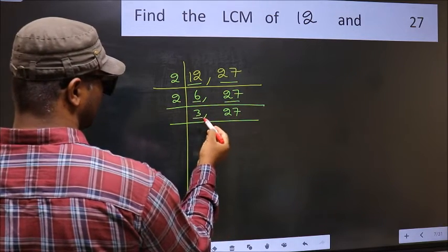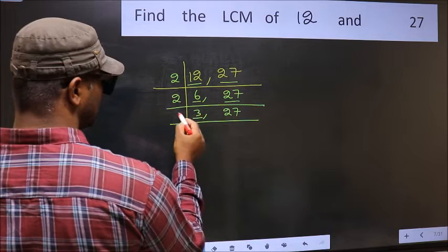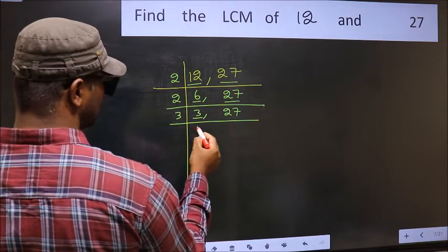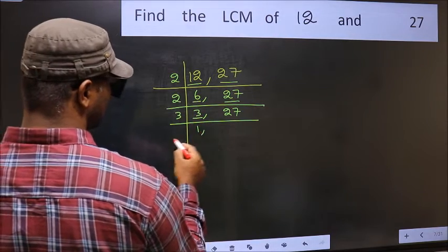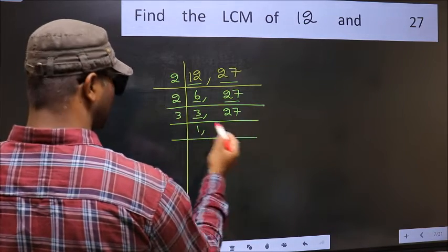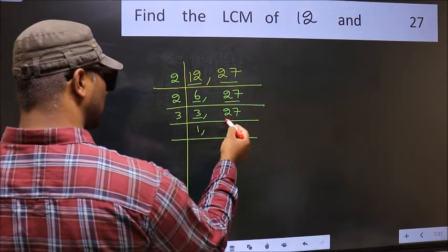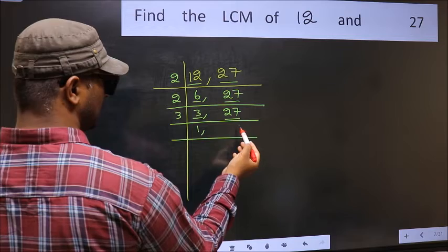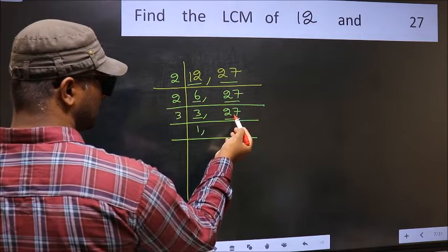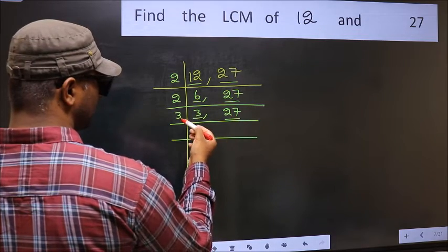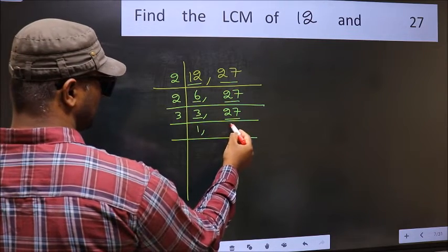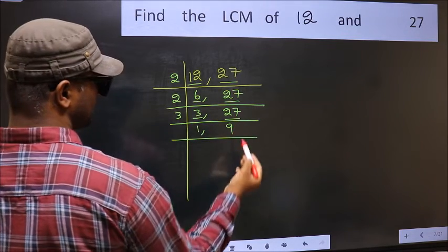Now we have 3. Since 3 is a prime number, 3 times 1 is 3. For the other number, 27 — when do we get 27 in the 3 times table? 3 times 9 is 27.